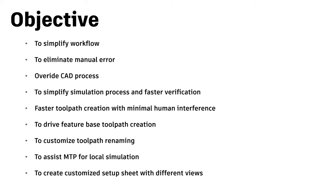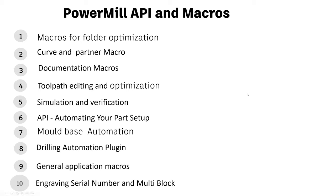We have simplified the macros into two categories: one is the API and the other is the macros. Under the macros folder, we have categorized different options — for example, folder creations. I'm going to detail how you can use macros for folder creations, and each option has more than four to five macros.